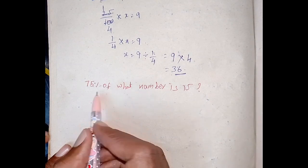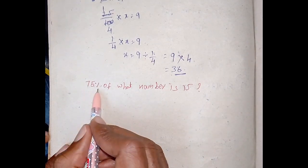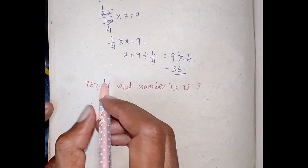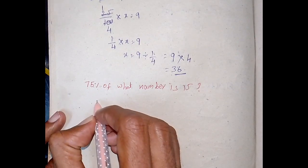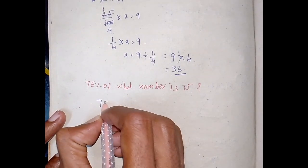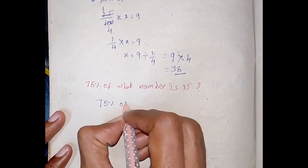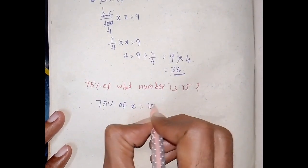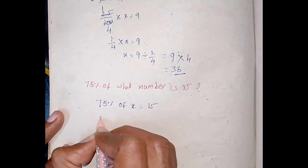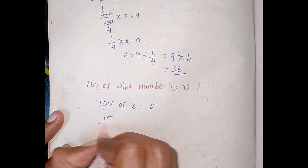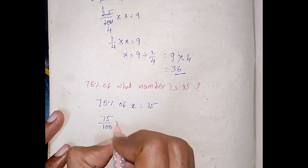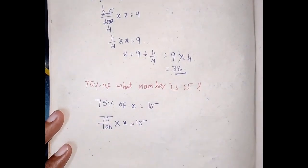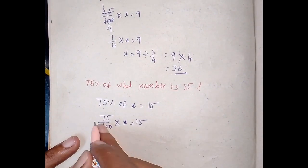Next question: 75% of what number is 15? Let that number be x. So 75% of x is equal to 15. 75% means 75 by 100, into x, is equal to 15. Now we do cancellation.